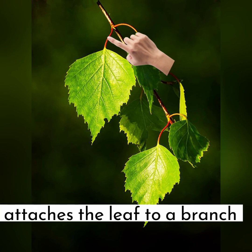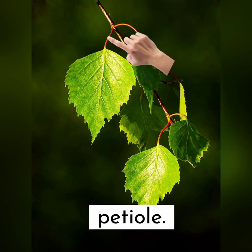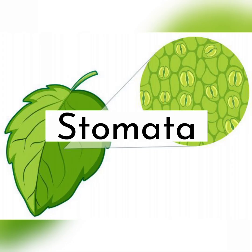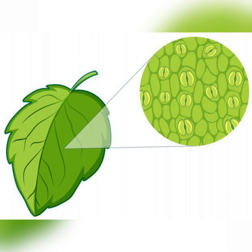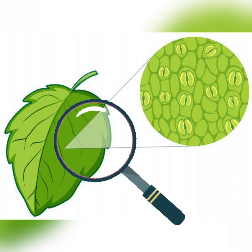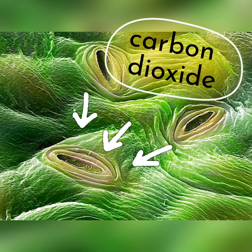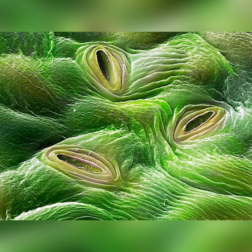Next we have the leaf stalk. The leaf stalk is the part that attaches the leaf to a branch or stem. It is also called the petiole. On the other side of the leaf, there are tiny openings called stomata. However, as they are too small, they can only be seen through a lens. These tiny holes, or stomata, help a plant to take in carbon dioxide and give out oxygen.